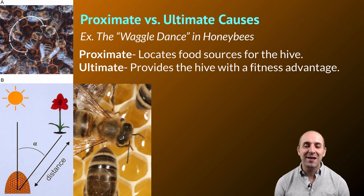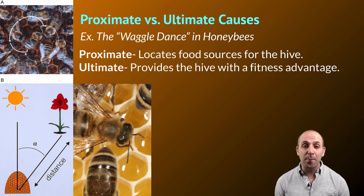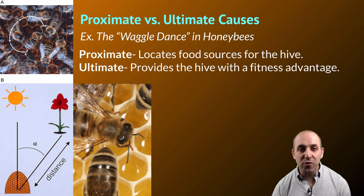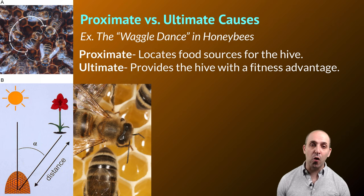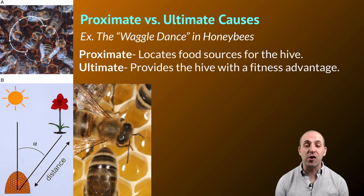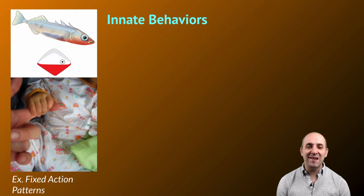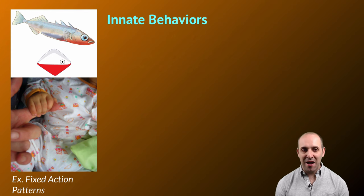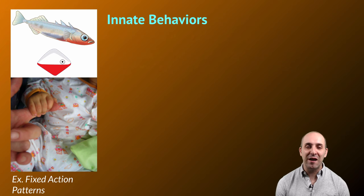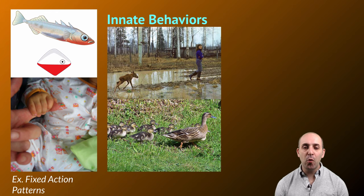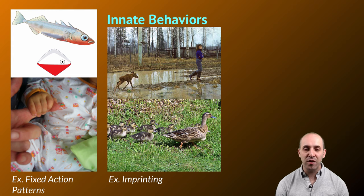As long as a behavior confers an adaptive advantage on the individuals that engage in it, evolution can act to drive the development of that behavior throughout an entire population. This is particularly easy with honeybees since the waggle dance is almost entirely under direct genetic control. Similar direct genetic control is seen in the ants we started with. Behaviors under genetic control are often referred to as innate behaviors. These can be fixed action patterns, such as the aggression display in male sticklebacks whenever they see an object with a red underside, or the grasping reflex in newborn infants. They can also be more complex, such as imprinting behaviors in young animals, where they fixate on and begin to follow the first moving object they see once born.